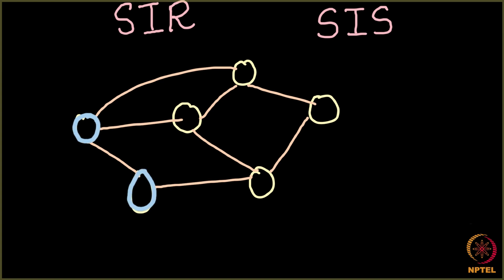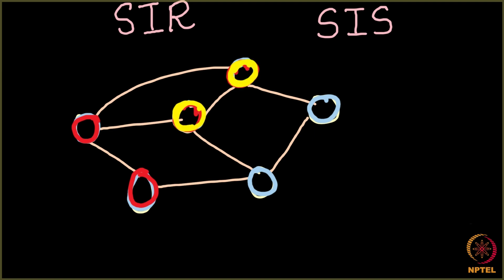Initially all of these nodes were susceptible, and then some nodes became infected. These infected nodes started infecting other people, while some nodes were getting recovered and some were going from the infected state back to the susceptible state. So these nodes were shifting from one phase to another.